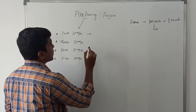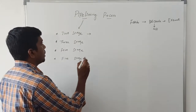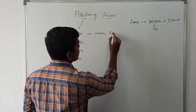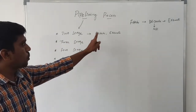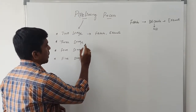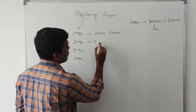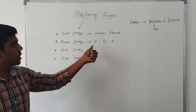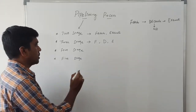In two-stage pipelining, there are only two operations involved: fetch and execute. Fetch the instruction is one stage, and execute the instruction is another stage. In three-stage pipelining there are three stages: fetch, decode, and execute — fetch the instruction from memory, decode the instruction, and execute the instruction.